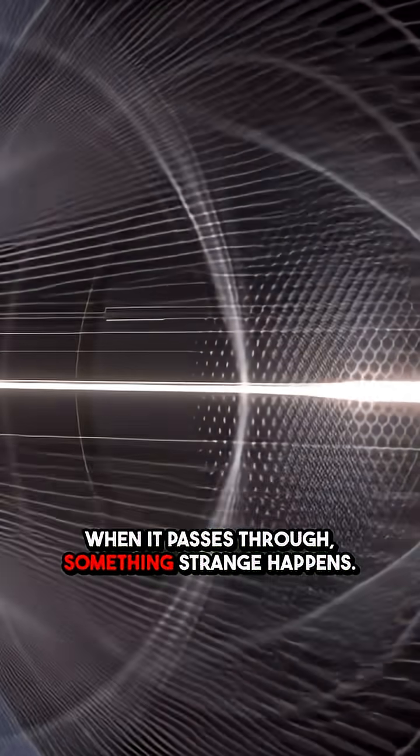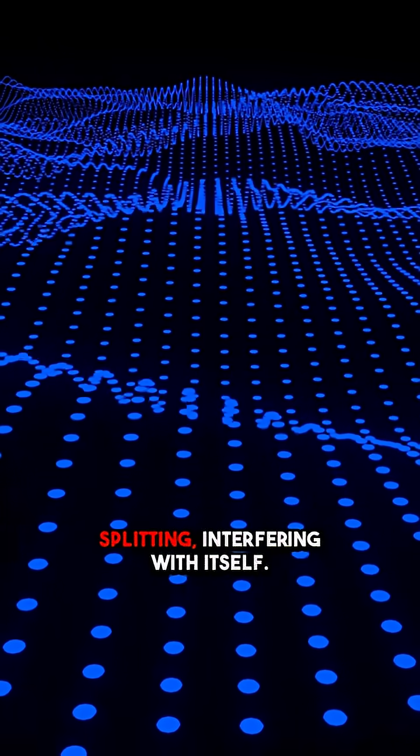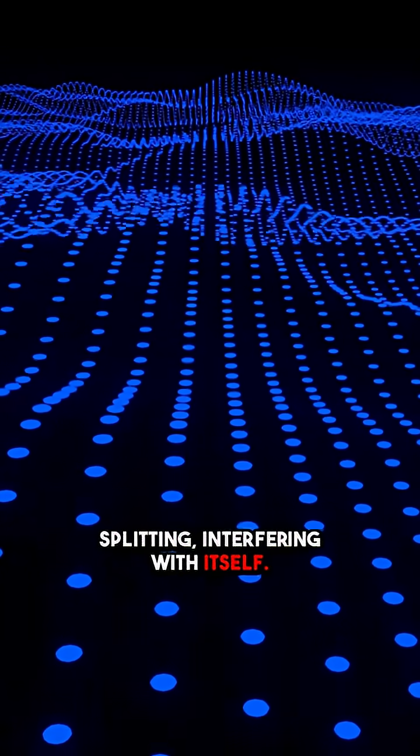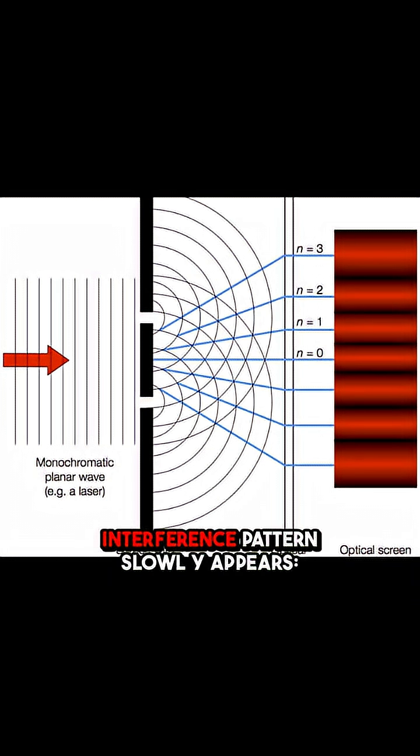When it passes through, something strange happens. It behaves like a wave, splitting, interfering with itself. On the screen behind, an interference pattern slowly appears, alternating bands of light and dark.